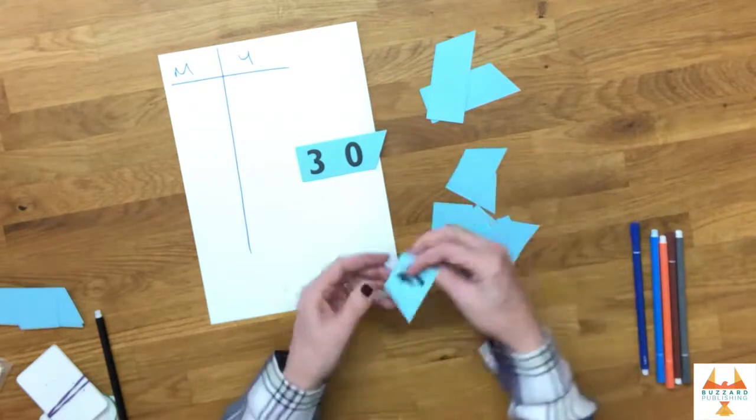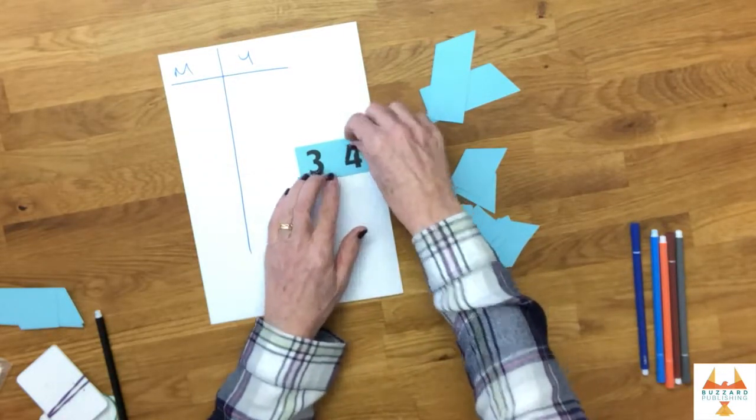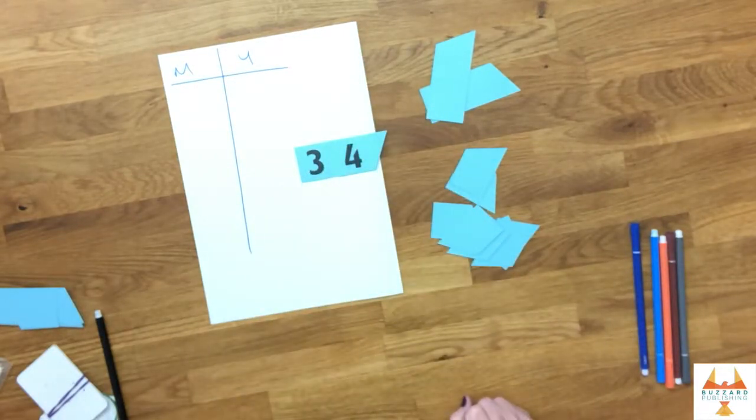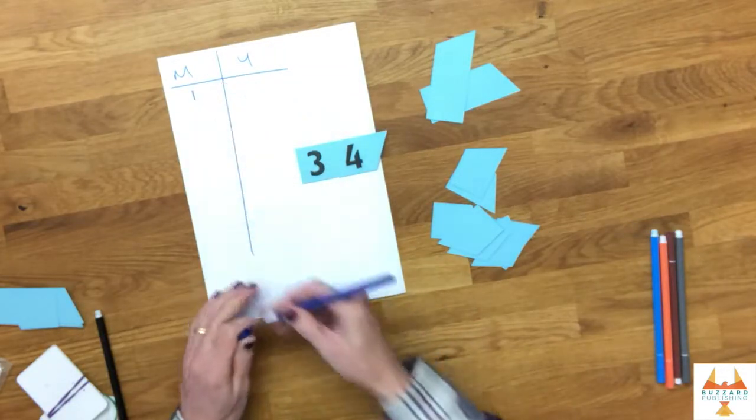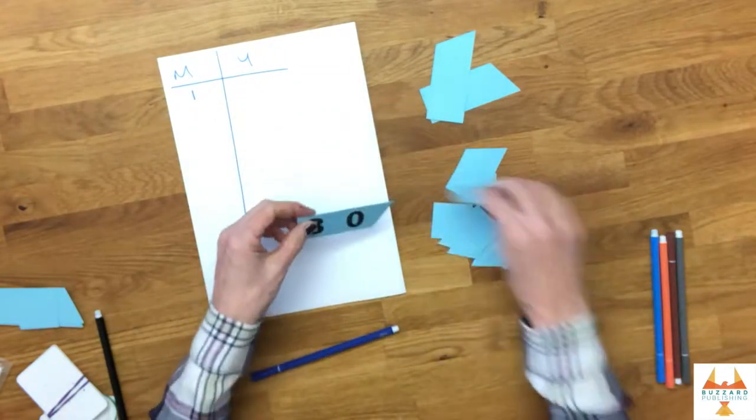30. 34. I know 11 times three is 33. So 34 divided by three will be 11 remainder one. So I score that one as the remainder. Put the cards back.